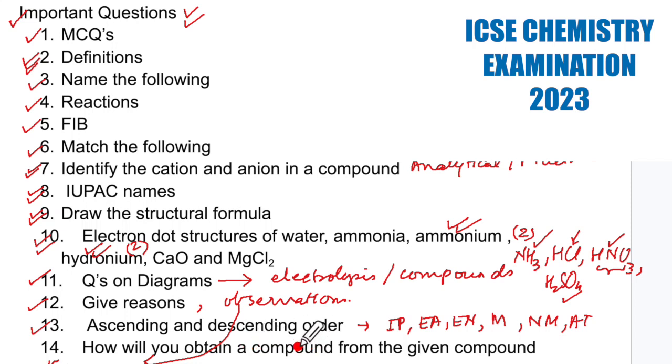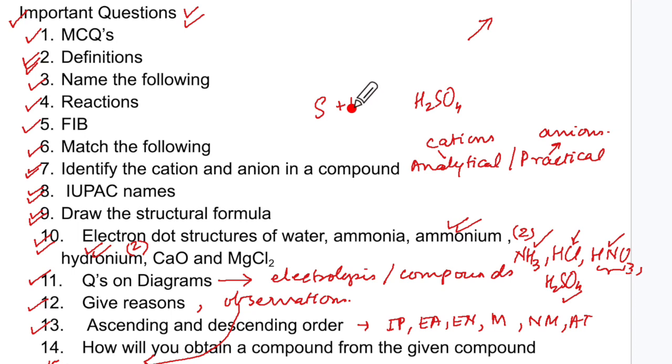Next one is how will you obtain a compound from the given compound? They will ask you starting with sulfur, how will you get H2SO4 using an acid? So you should know sulfur plus HNO3 concentrated is going to give you this along with your water and NO2 that is nitrogen dioxide gas. You should know how to balance it, know that properly. Also I will have the metallurgy questions. Metallurgy also can come in the questions based on diagram. So electrolysis, study of compounds and also metallurgy.